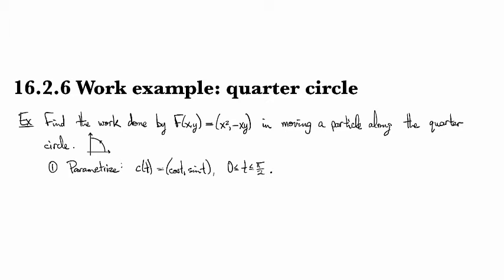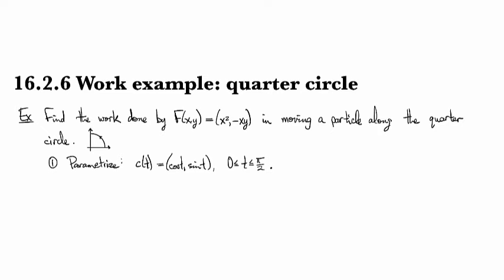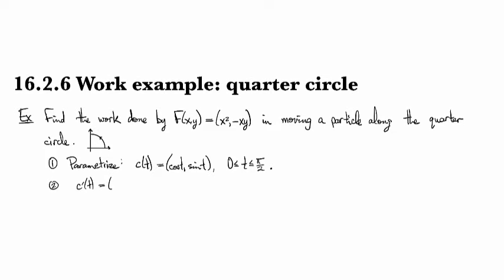And so we'll need t to go from 0 to pi over 2, in order to make it a quarter of the way around the circle. And just because I need it, I'm going to next write down the derivative here.